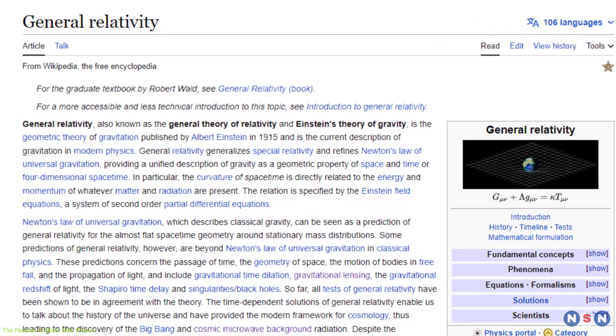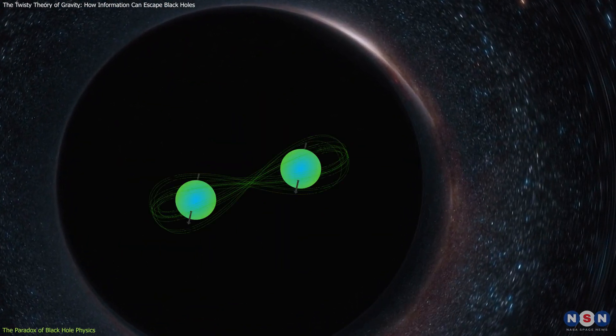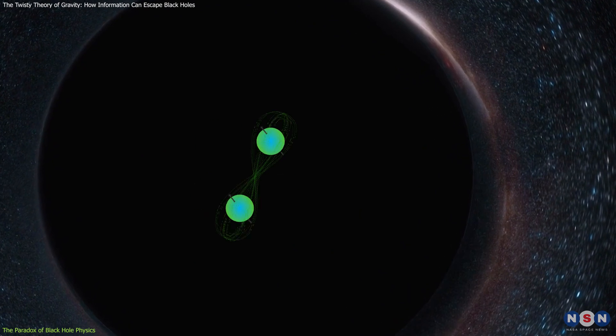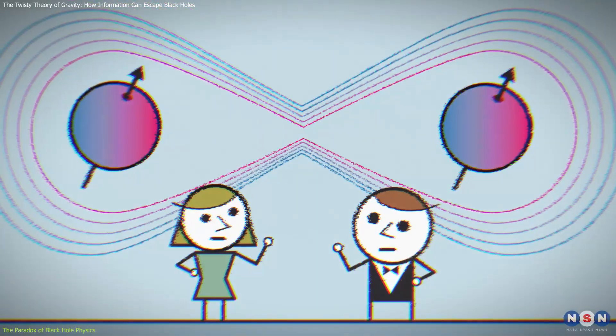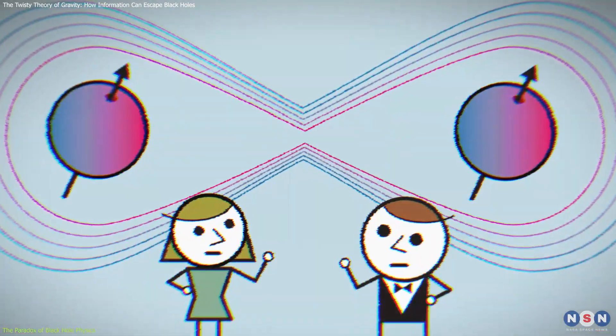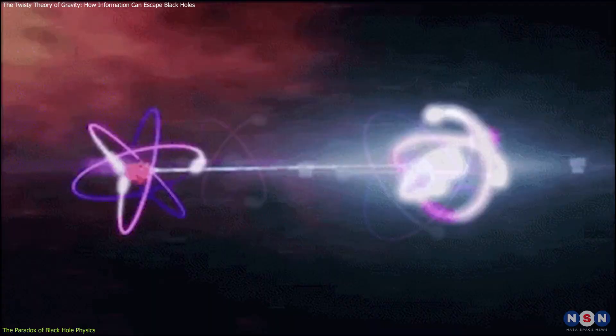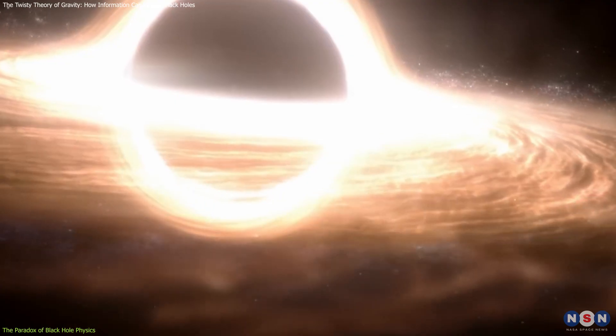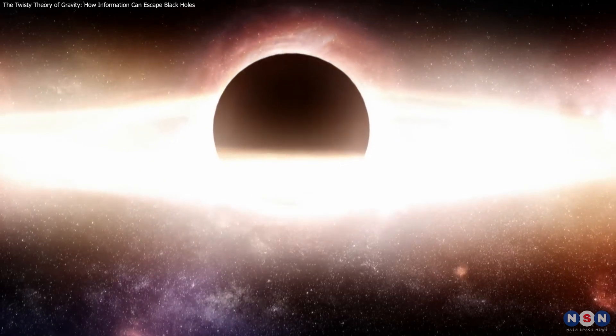However, according to general relativity, once the particles cross the event horizon, they are lost forever, and nothing can escape from the black hole, not even information. So how can Alice and Bob still access their particles' information? And what happens to their entanglement? Does it break or persist? And if it persists, how does it affect the quantum state of the black hole? These are some of the questions that arise from the paradox.